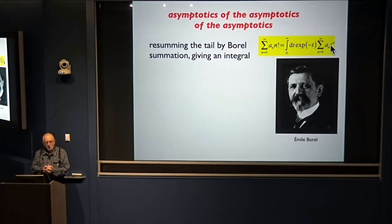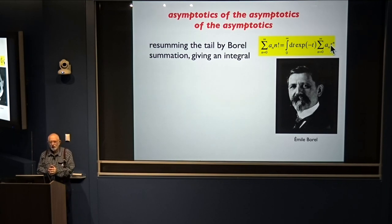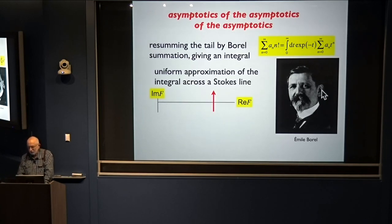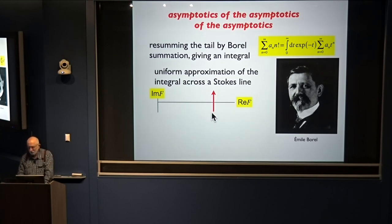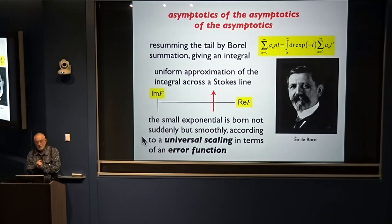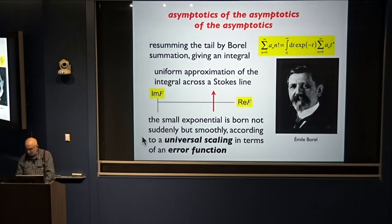Borel summation works very nicely and is commonly used away from a Stokes line. But on a Stokes line, traditionally people say the series is not Borel-summable — that's a mistake. It is Borel-summable if you do it right. The idea is to approximate this universal divergent series across a Stokes line, so F is near the real axis. Then you learn that a small exponential is born not suddenly but smoothly according to a universal scaling in terms of an error function.